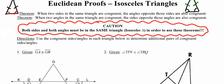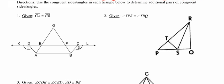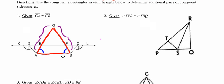Let's take a look at an example of how this might be used in a proof. The directions say to use the congruent sides or angles given for each triangle to determine an additional pair of congruent parts. In the first example, we're given that side GA is congruent to side GB. If I highlight the triangle containing GA and GB as sides, I can see it's that red isosceles triangle, so I also have a pair of congruent base angles down at points A and B.